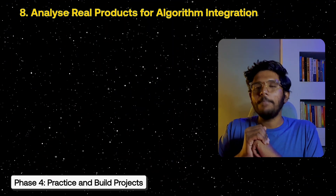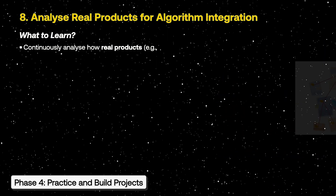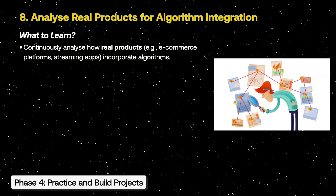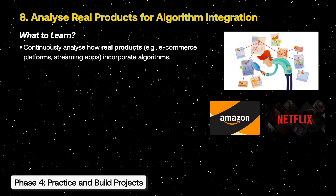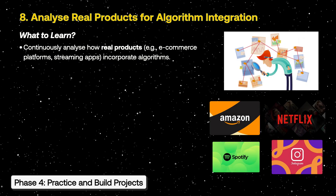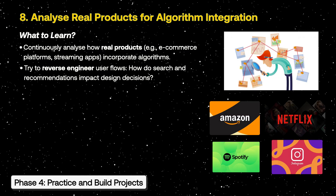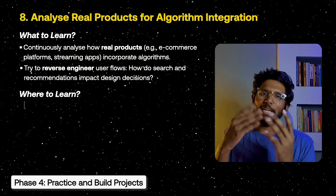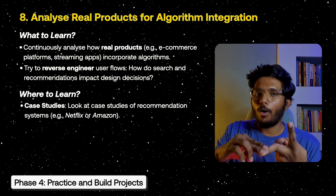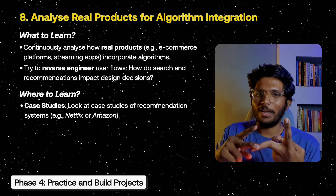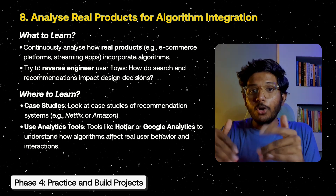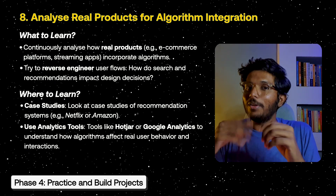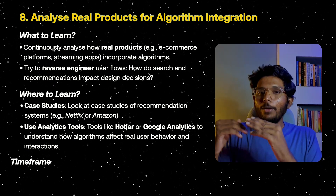The second part of phase 4: analyze real-life products using algorithms. Use Amazon, Netflix, Spotify, and Instagram — reverse engineer these products. Learn how their design impacts decisions. Study case studies on Medium and read blogs and articles. Learn how these algorithms influence layouts and interactions with user behaviors. Analyze these products in your daily life.